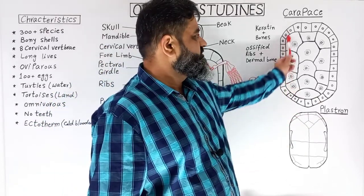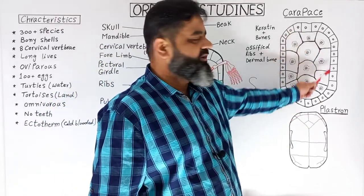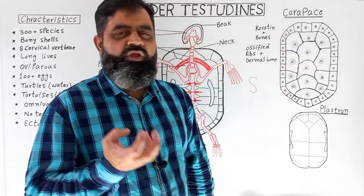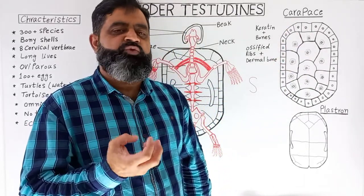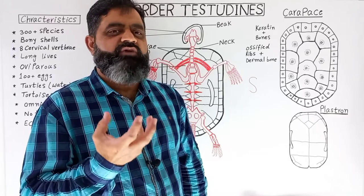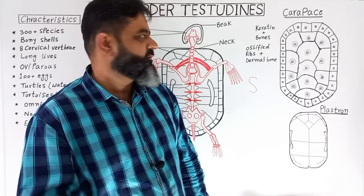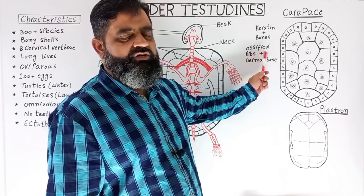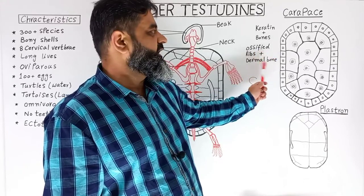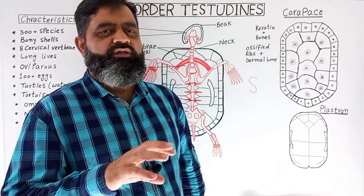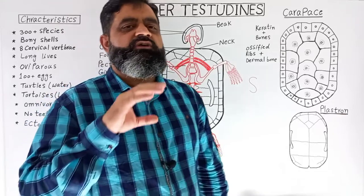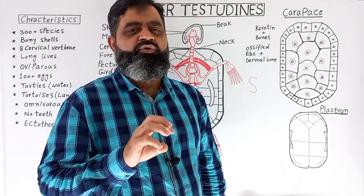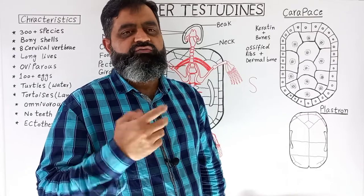The carapace has multiple regions with plate-like structures which provide great strength to the shell. Ossified ribs are also associated with this structure, and dermal bones all join together to form it. This structure on the dorsal surface protects the internal organs, bones, and muscles of the animal.